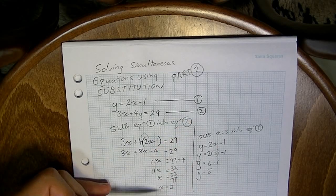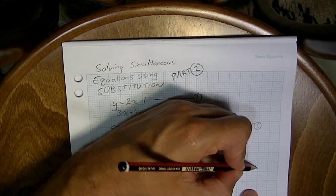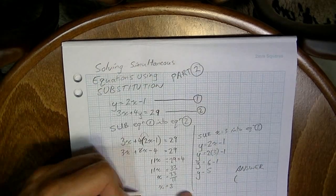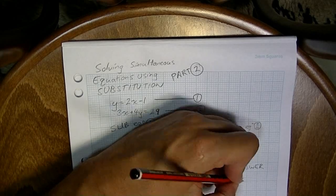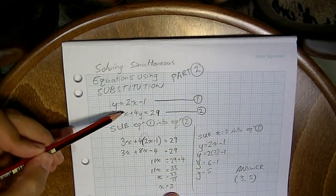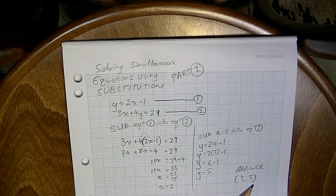Now, please don't stop here. You haven't given an answer yet. The answer, the simultaneous solution to this equation, is x equals 3, y equals 5. That means that these two equations are going to meet at a point (3, 5).